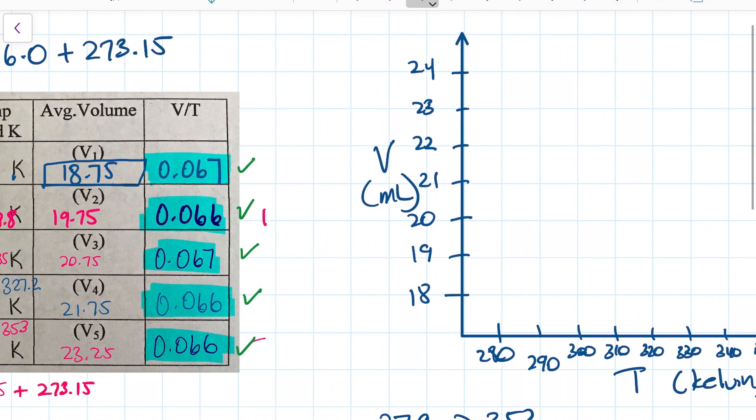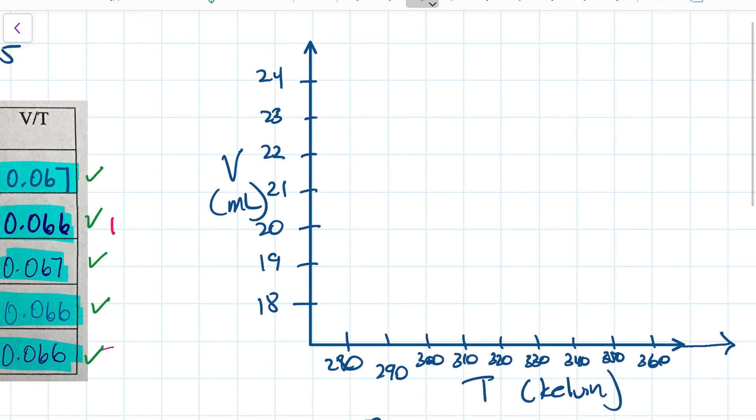Okay, so now what we did is I told you to choose a scale. On this side I started at 18 and went to 24 based on my data, and on this side I actually decided to start at 280 and ended at 360. On my x-axis I went up in increments of 10, and on my y-axis it worked perfectly to go up in increments of 1.